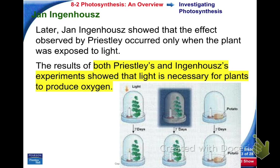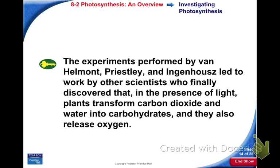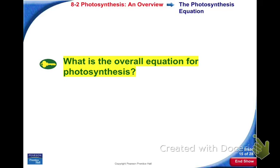Ingenhaus took Priestley's experiment one step further. He had one setup in the light and one in the dark — in the dark, the candle went out because the plant could not perform photosynthesis. He was able to show the third thing plants need: light. They need light, carbon dioxide, and water in order to do photosynthesis. Put all those experiments together and we come up with the basic structure of the formula for photosynthesis — all without any high-tech equipment, just asking questions and making good observations.